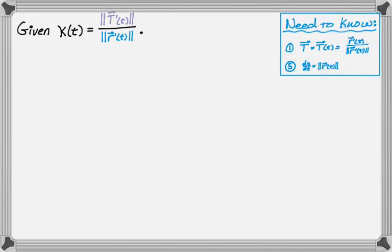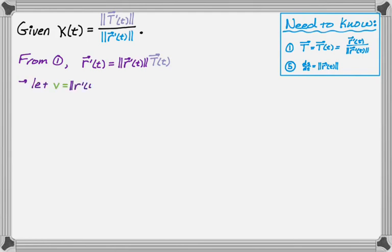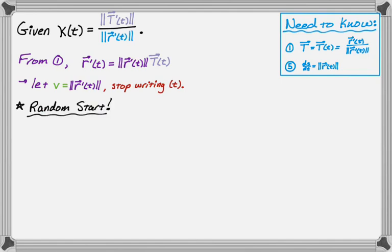From number one I can rearrange: r prime of t equals the magnitude of r prime of t times T, which is super useful. I'm going to let the magnitude of r prime of t equal v, so I can stop writing that out — every time I write v, it's really the magnitude of r prime. And I'm going to stop writing the 'of t' part, since everything we're dealing with is a function of t.